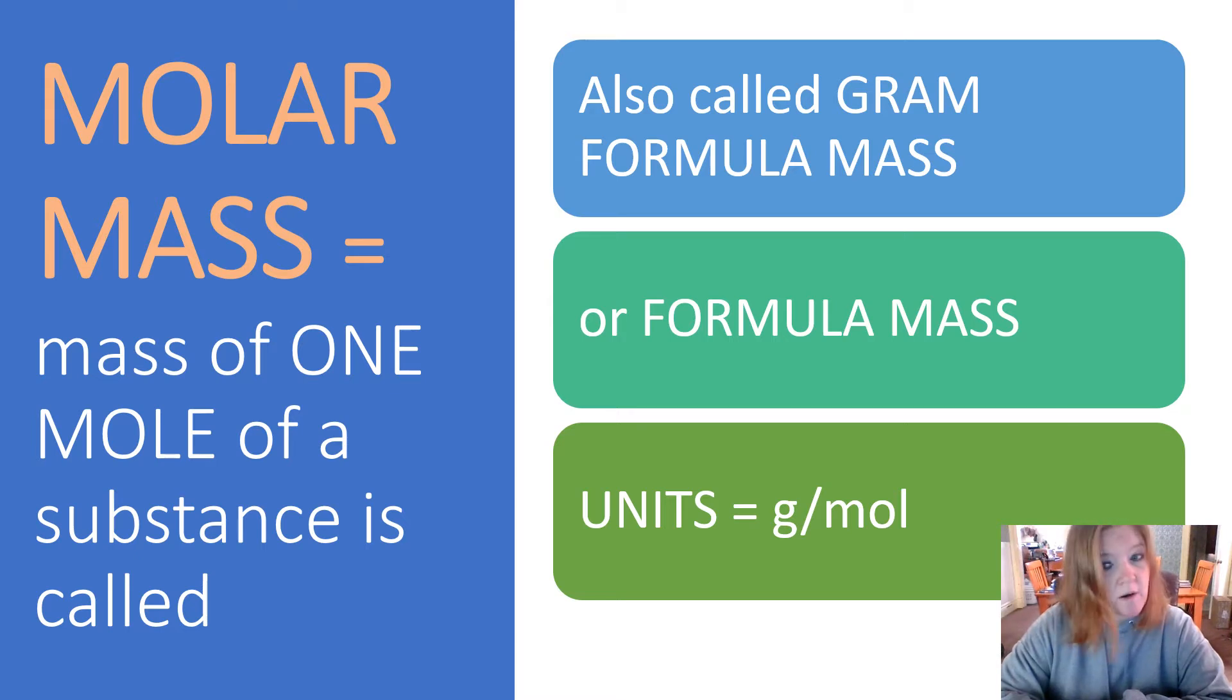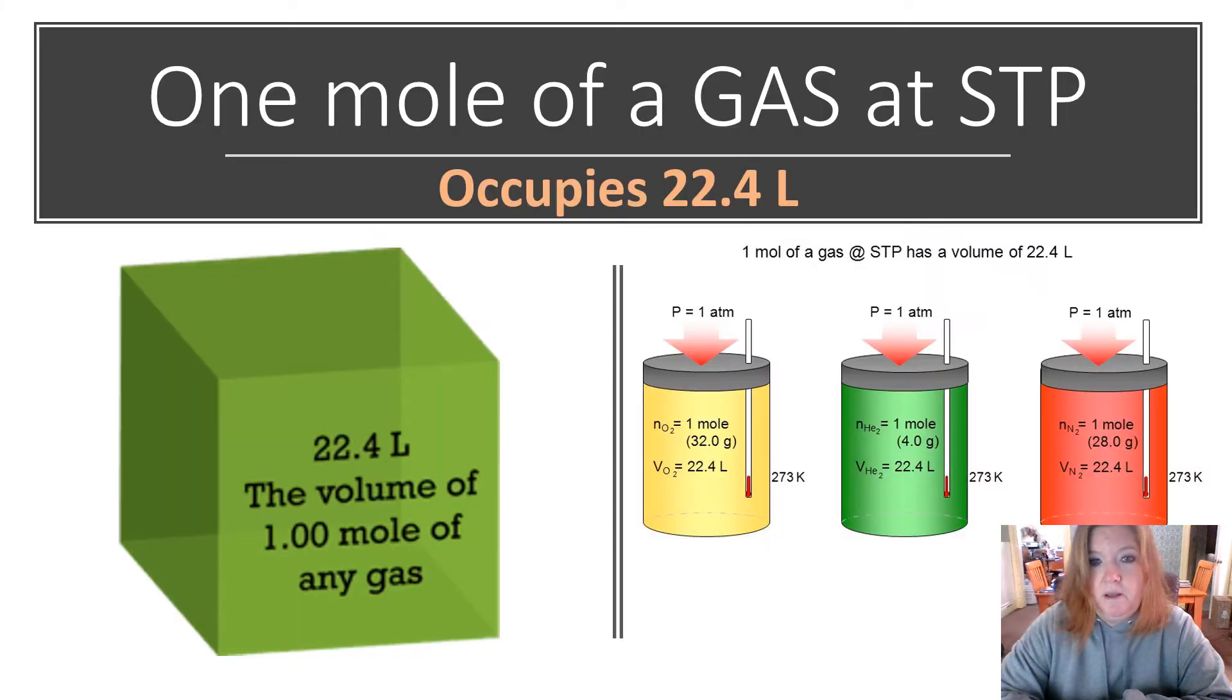We can also call it formula mass or gram formula mass, and the units are grams per mole. One mole of a gas at STP, so standard temperature and pressure, so standard temperature zero degrees Celsius or 273 Kelvin.